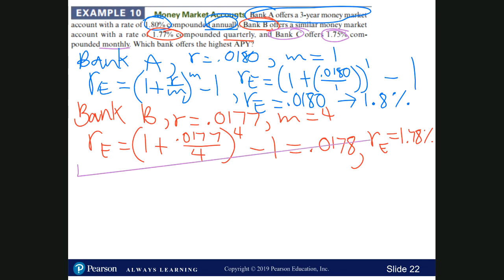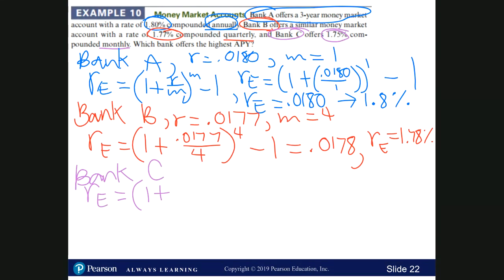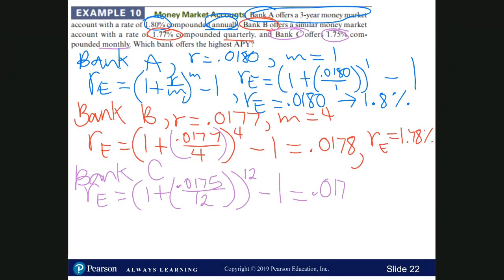Finally, Bank C has a rate of 1.75%, so R equals 0.0175, compounded monthly so M equals 12. R sub E equals (1 plus 0.0175 divided by 12) to the power 12, minus 1, which gives 0.0176, or an APY of 1.76%. Comparing all three banks, there is no doubt that Bank A offers the highest APY. This concludes this video.